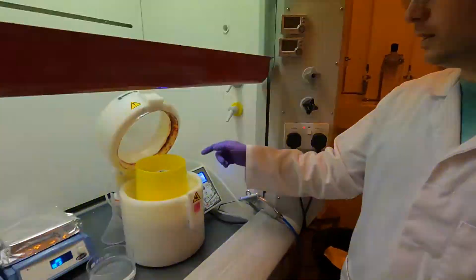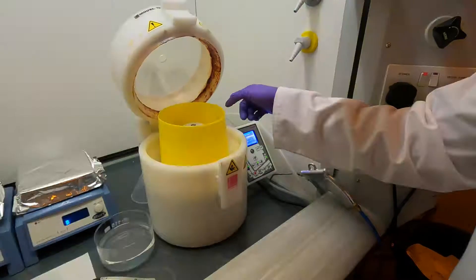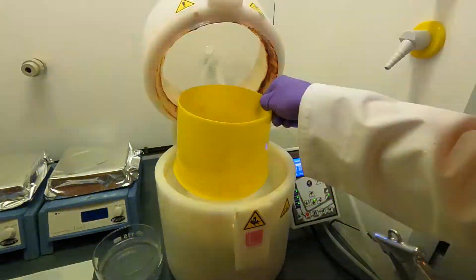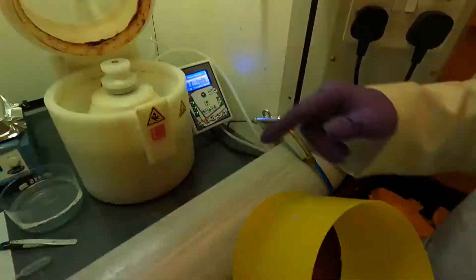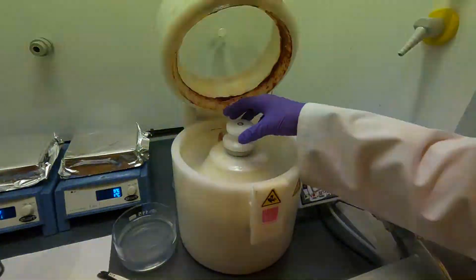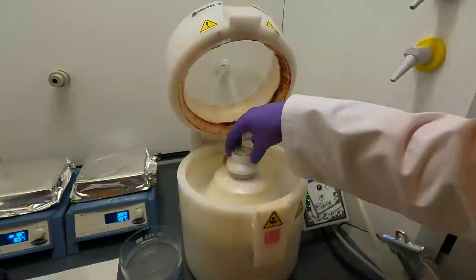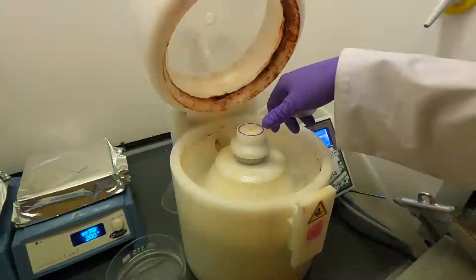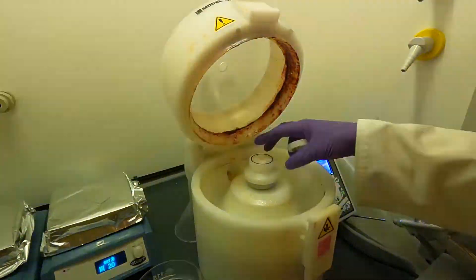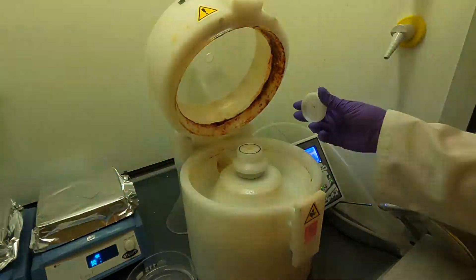This is the spin coater, it's quite a simple instrument. We've got essentially this splash guard for the liquid, and all it is essentially a chuck which spins. There's a motor underneath which will spin this chuck at the speed that we want.